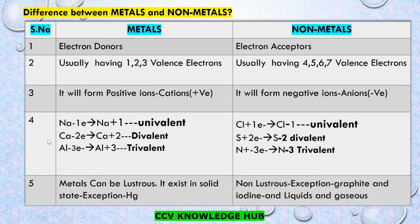Metals will form positive ions or cations. For example, sodium loses one electron and forms Na⁺ — univalent. Calcium loses two electrons and forms Ca²⁺ — divalent. Aluminium loses three electrons from its outermost shell and forms Al³⁺ — trivalent metal.